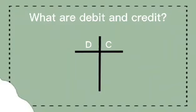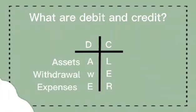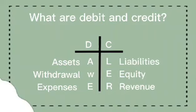At hindi tandaan, hindi porket debit ay addition at kapag credit ay deduction. Kaya dapat natin tandaan ang AWILDIER: debit side — asset, withdrawal, expenses. Kapag nababawasan ang tatlong yan, ay e-credit side mo. And for credit side, are liabilities, equity, and revenue. At kapag naman sila ay nadadagdagan, e-debit side mo.